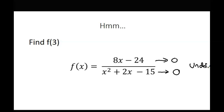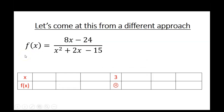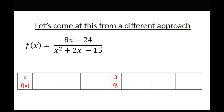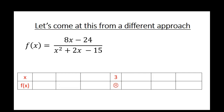But even though the function doesn't exist, the limit does. I'm going to try to figure out what this function would equal if it did exist at that point. Even though it doesn't exist when I plug in 3, I'm going to plug in some numbers that are close to 3. For instance, I'm going to start by plugging in 2.9 — you agree 2.9 is pretty close to 3, right? That's not going to make the bottom 0; it'll make something really close to 0 but it won't be 0, so it's legal.